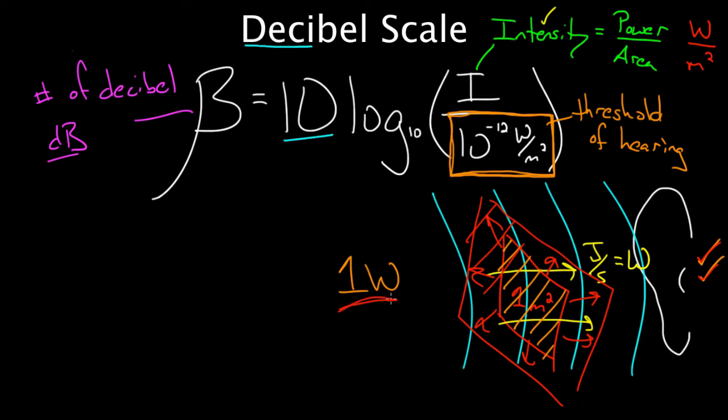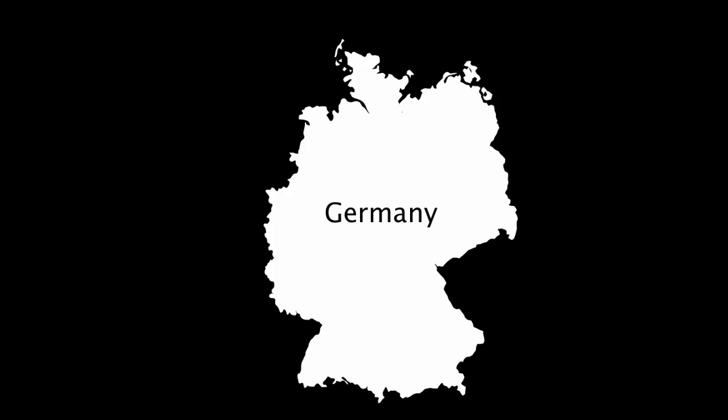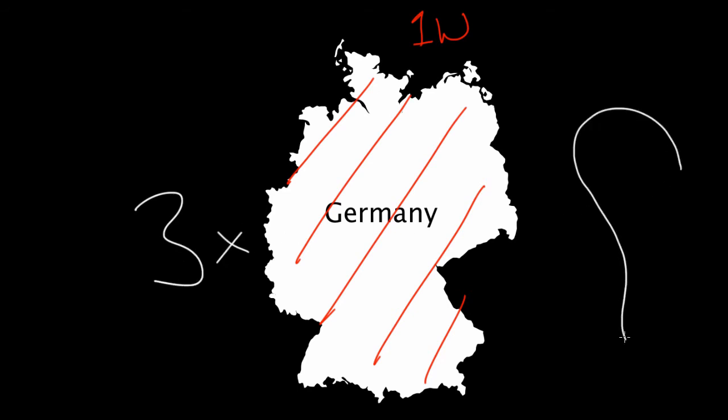What do you think? Football field? You know? I don't know, a city? No, it turns out, if you do the calculation, I suggest you do, it's interesting. You would get that you can spread one watt over the entire land area of Germany about three times over and still it's intense enough for the human ear to hear. That's how unbelievably sensitive our ears are. It's actually, I told you it was unbelievable, I can hardly believe it myself.